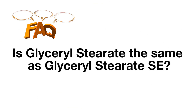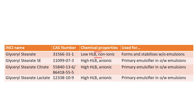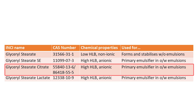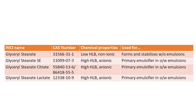I've been asked about glycerol stearate. Is glycerol stearate the same as glycerol stearate SE and glycerol stearate citrate? No, they're not - they're actually three different chemicals. I have on the screen the true INCI name and the CAS number reference so you can see they are three different materials. Glycerol stearate has a low HLB value - it's non-ionic and best suited in water-in-oil emulsions. Glycerol stearate SE and glycerol stearate citrate are high HLB, anionic, and best suited to oil-in-water emulsions. You can't use them interchangeably.